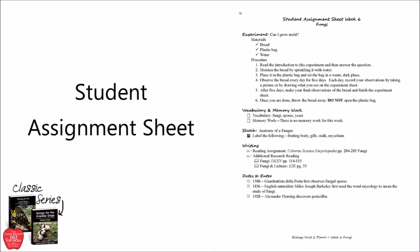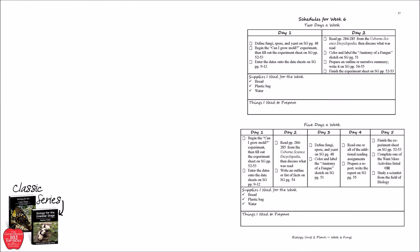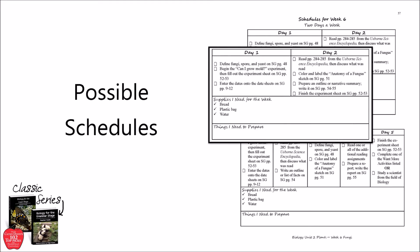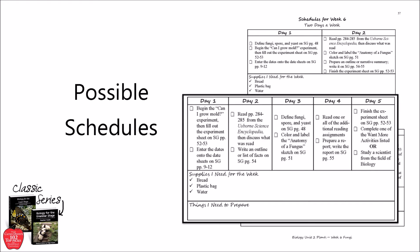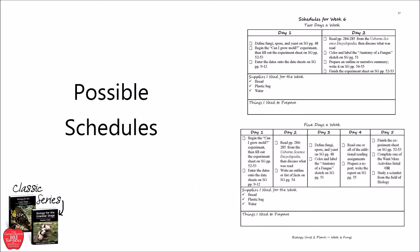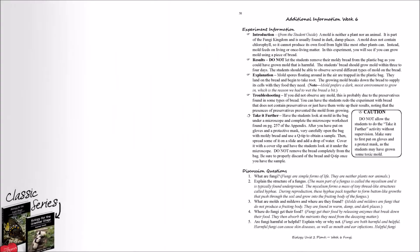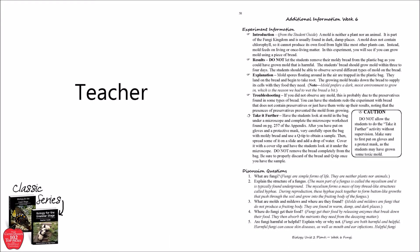The student assignment sheet is followed by a schedule page, which gives you two options for completing the week's assignments. The two-day-a-week schedule, which will take about one and a half to two hours to complete twice a week, and the five-day-a-week schedule, which will take about 45 minutes to an hour a day, five days a week. Each of these schedules are designed to give you the tools to guide your student as they plan out their week. Turn the page and you'll find additional information with loads of teacher helps to make the program easier for you to use, no matter what your background is.